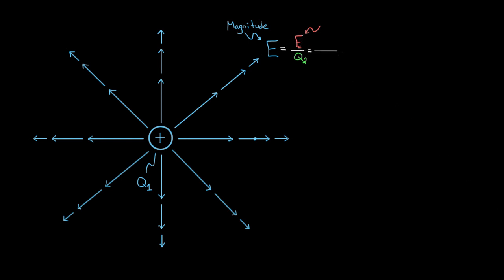Coulomb's law says that the electric force between two charges is going to be K, the electric constant, which is always nine times ten to the ninth, multiplied by Q1, the first charge interacting, multiplied by Q2, the other charge, divided by the center-to-center distance between them squared. And because we're finding electric field, we're dividing by Q2. So notice what happens: Q2 cancels.